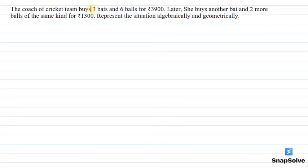Hello everyone, I am your teacher for this question. The question is: the coach of cricket team buys 3 bats and 6 balls for Rs. 3900. Later she buys another bat and 2 more balls of the same kind for Rs. 1300.